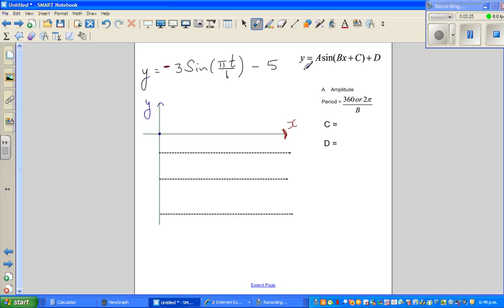The first number, this is the general formula of any sine graph: a sine bracket px plus c plus d. This is the general formula. The first number tells me the amplitude.